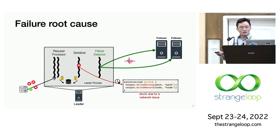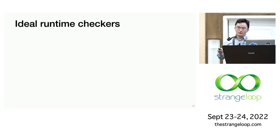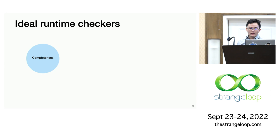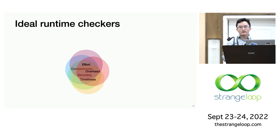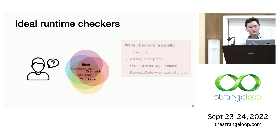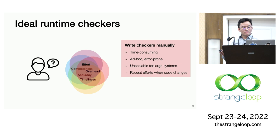Such kind of failure is not really a corner case, but widely exists in production systems. To achieve high availability, we need powerful runtime checkers that can cover various kinds of gray failures like this example. Besides completeness, these checkers should ensure that detection is accurate, timely, incurs small overhead, and requires low effort. Achieving all of those properties together is challenging. We might rely on developers to manually write those checkers, but writing high-quality runtime checkers is a very time-consuming process, and those checkers are typically ad-hoc and error-prone. Developers have to keep repeating those efforts whenever the code changes. So we need tooling support for runtime checkers, but such support is very lacking today.